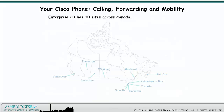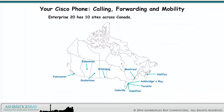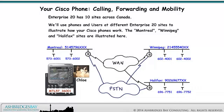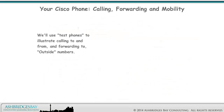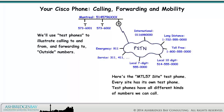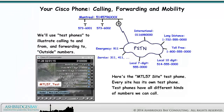Enterprise 20 has 10 sites across Canada. We'll use phones and users at different Enterprise 20 sites to illustrate how your Cisco phones work. The Montreal, Winnipeg, and Halifax sites are illustrated here. We'll use test phones to illustrate calling to and from, and forwarding to, outside numbers. Here's the Montreal 57 site test phone. Every site has its own test phone, with all different kinds of numbers that we can call.